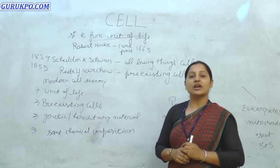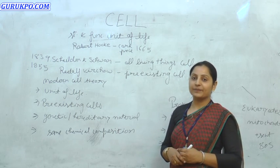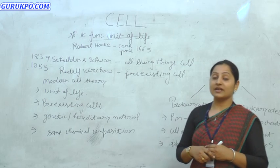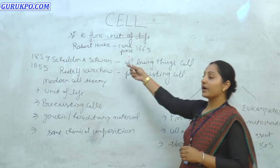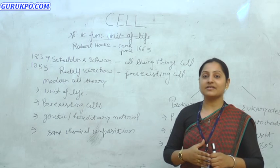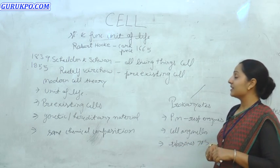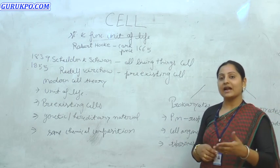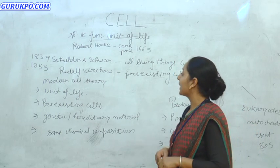It is called the structural and functional unit of life. The scientist who discovered the cell for the first time was Robert Hooke. He discovered cells by observing cork pieces, and this was in 1665.